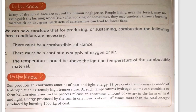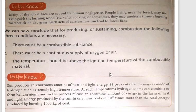In the previous class, we studied about the conditions of combustion. Let us have a quick review. Condition number one: there must be a combustible substance. There must be a continuous supply of oxygen or air. The temperature should be above the ignition temperature of the combustible material. These are the three conditions required for combustion. Without these conditions, combustion cannot take place. If any one condition is missing, combustion cannot take place.